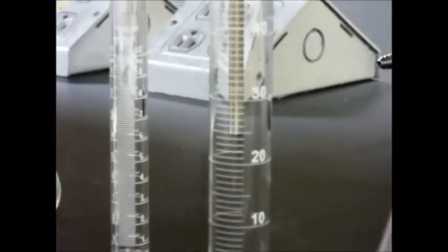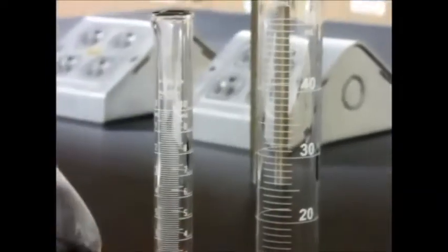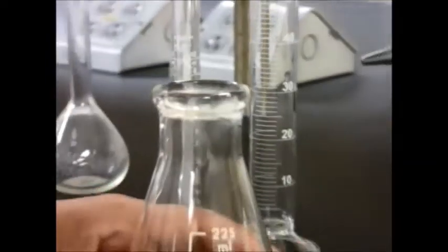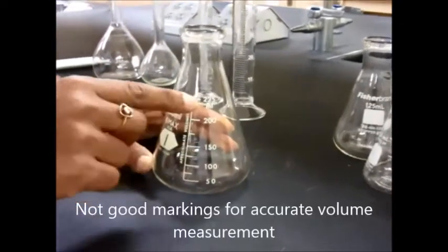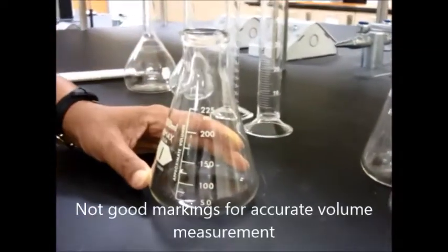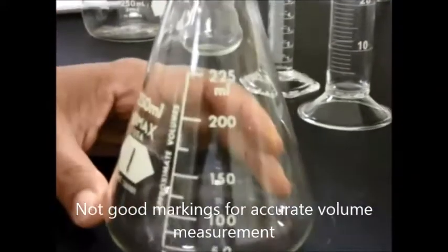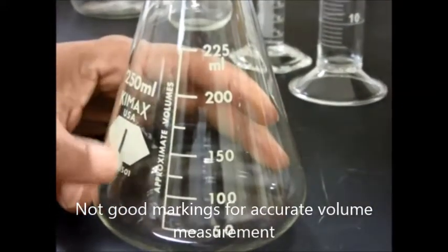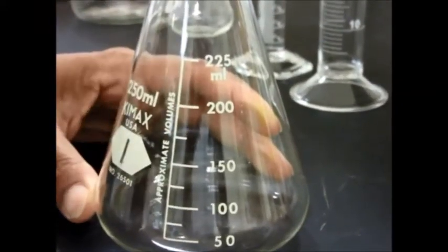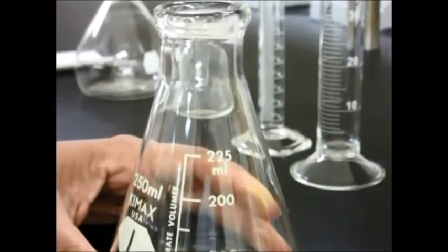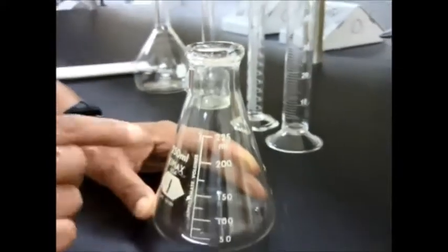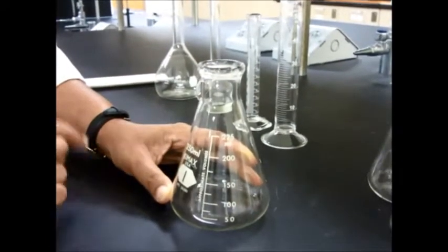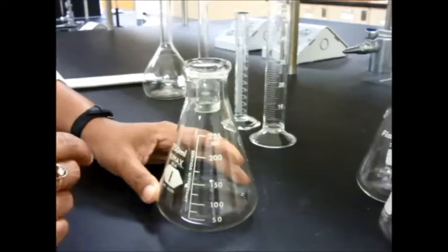One other thing that I want to show you for some of these measuring devices is, for example, if you look at the 250 Erlenmeyer flask, you will see that the measurement or the gradient actually goes only up to 225 milliliters. It doesn't go up to 250 milliliters, as the flask says, which means that if you fill it up to the top, then it's going to be 250. Otherwise, you can measure 225, 200, 150, but not accurately 250 milliliters. That's not going to be possible.